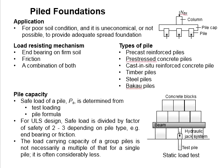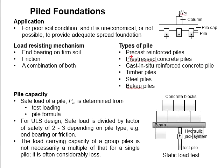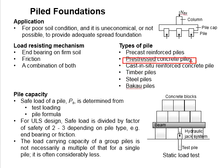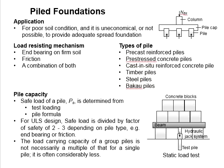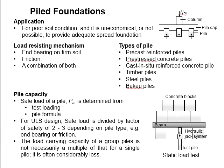Some pile foundations may rely on both of these mechanisms to resist the vertical load. There are various types of piles, which include precast reinforced piles, pre-stressed concrete piles, cast-in-situ reinforced concrete piles, timber piles, steel piles, and buckle piles. Each type of pile has its own applicable range in terms of load-carrying capacity as well as specific limitations.